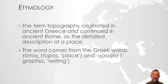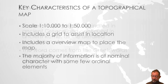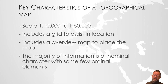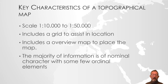Topographical maps are typically relatively large scale maps, so 1 to 10,000 to 1 to 50,000. They typically include some form of grid to help you assist during the location of it. They typically have a detailed map and then an overview map, which can be used to locate yourself in a larger context.